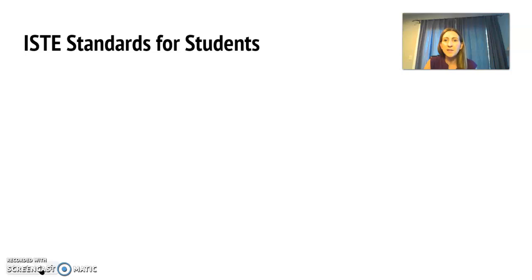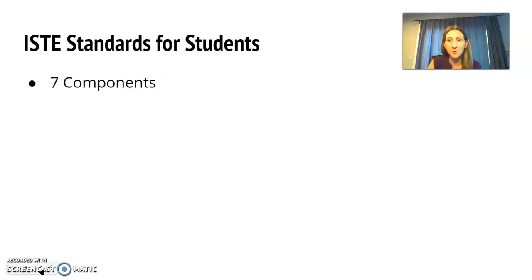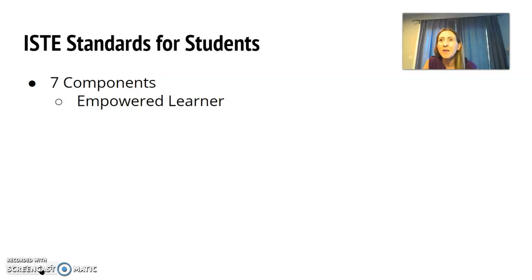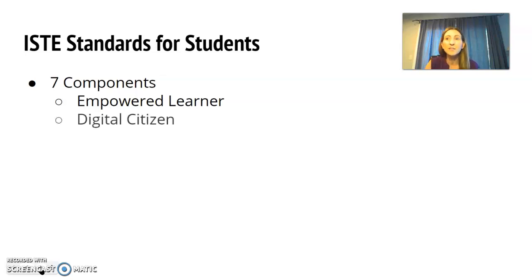The ISTE standards for students are very similar — they also have seven components and most of them are connected directly with their titles. Empowered learner: students actively choose, achieve, and demonstrate competency in their learning goals. Digital citizen — here it is again: students recognize the rights, responsibilities, and opportunities within this digital world.